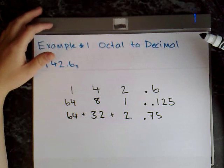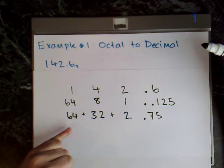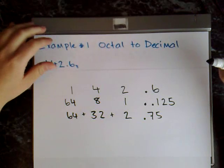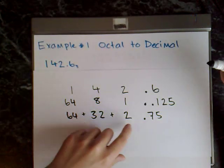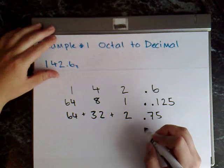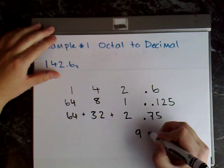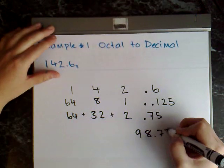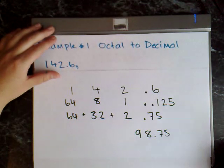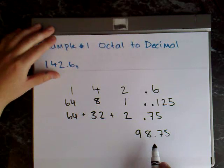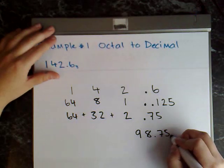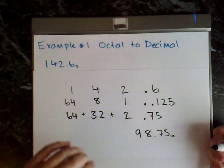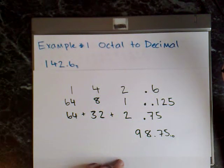And then the last step now is just to add up this bottom row. And then that will give me my final answer. So 64 plus 32 plus 2 plus 0.75 equals 98.75. And to show that this is now in decimal form I write a subscript 10. And that's the final answer.